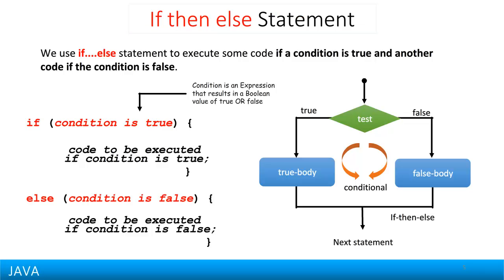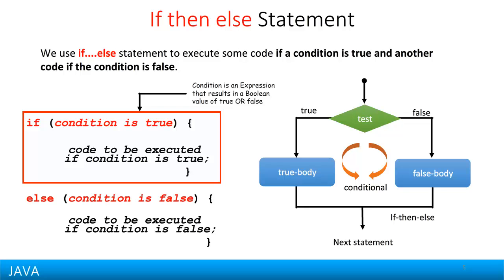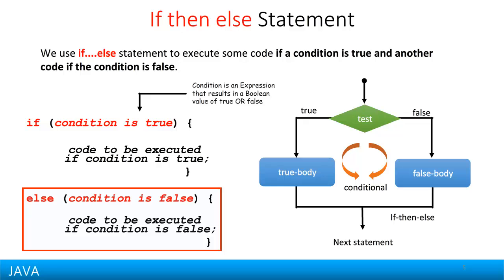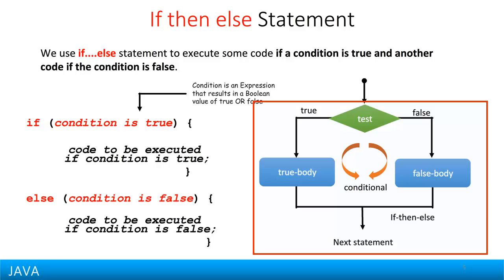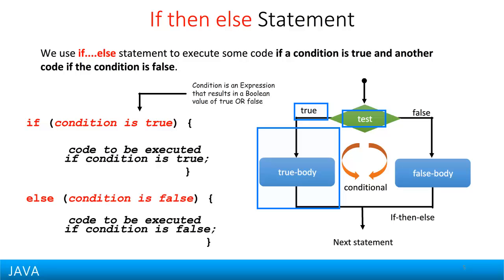The IF THEN ELSE statement is a slight enhancement over the IF statement. Here we define a program flow where the program executes one block of code if the condition is TRUE and another block of code if the condition is FALSE. We can see in the flowchart that when the test condition evaluates to TRUE, the code in the TRUE part executes and when it evaluates to FALSE, the code in the FALSE part executes.